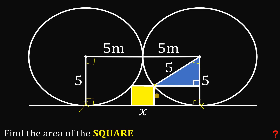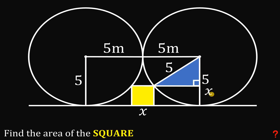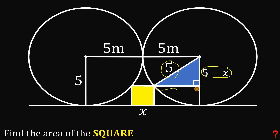All sides of the square are equal to x, so the measure of the vertical segment on the side is also x. Therefore one of the legs of this right triangle must be equal to 5 minus x. We now have the hypotenuse, which is 5, and one leg, which is 5 minus x — the only missing length is the other leg.